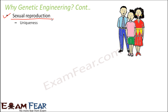Sexual reproduction happens in most of the higher animals including human beings. One of the key features of sexual reproduction is uniqueness — each organism is different from the other. In human beings, each and every person is different from the other, and there is scope for variations which might be beneficial.